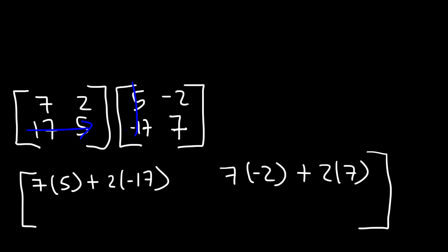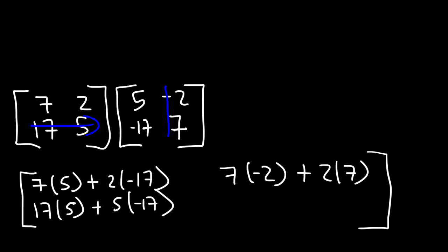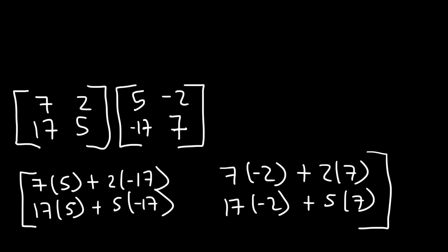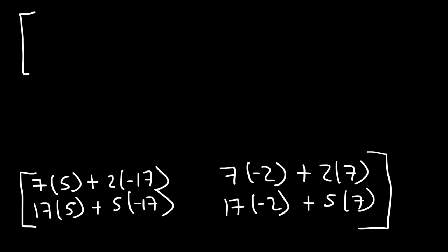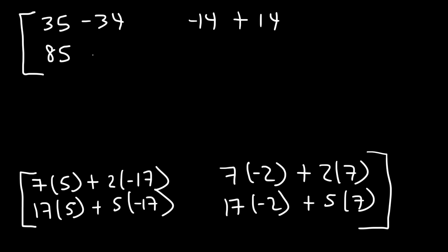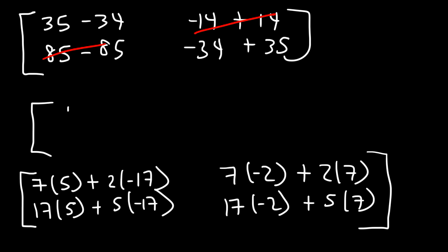Row 2 times column 1 gives us 17 times 5 plus 5 times negative 17. Row 2 times column 2 gives 7 times negative 2 plus 5 times 7. Simplifying: 7 times 5 is 35, 2 times negative 17 is negative 34; 7 times negative 2 is negative 14, 2 times 7 is 14; 17 times 5 is 85, 5 times negative 17 is negative 85; and the last entry gives negative 34 plus 35. So: 35 minus 34 is 1, negative 14 plus 14 is 0, 85 minus 85 is 0, and the last is 1.